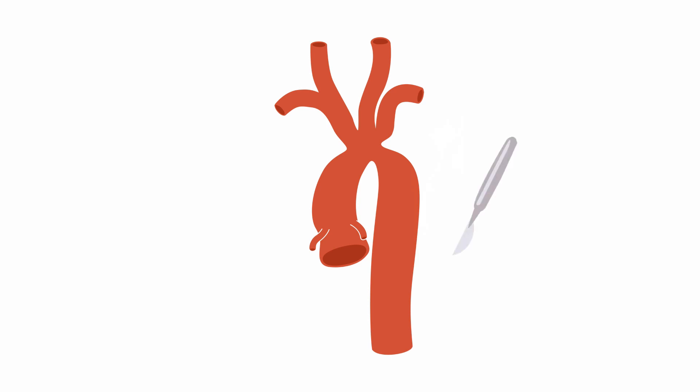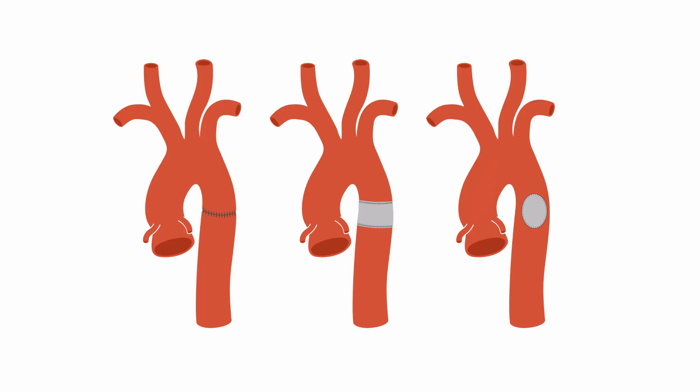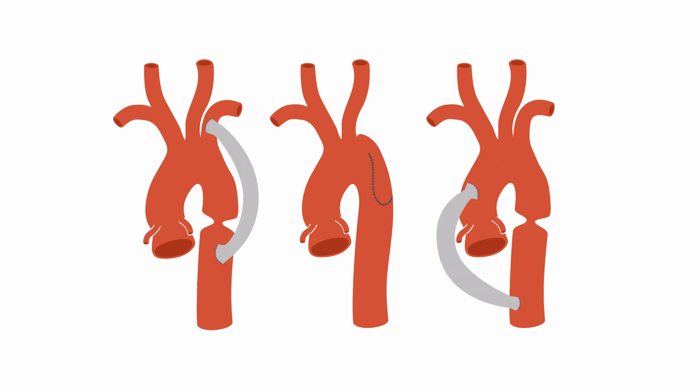Coarctations can occur at the top of the arch or involve the head and neck vessels, and this makes stenting very difficult, so surgery is required. It might even involve repairing the head and neck vessels themselves. There have been a lot of different surgical approaches in the past, so if you're scanning a patient with a repaired coarctation, it's good to know what type of repair they've had.